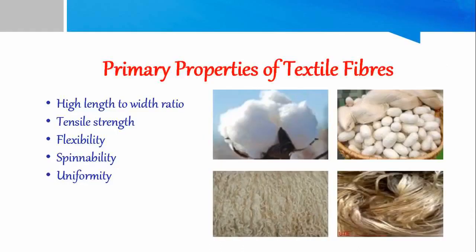In this video we will talk about the primary properties of textile fibers. What are the primary properties of textile fibers? First is high length to width ratio, tensile strength, flexibility, spinability and uniformity.